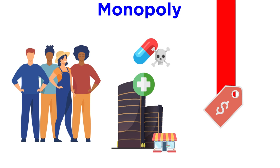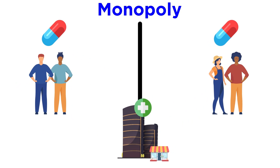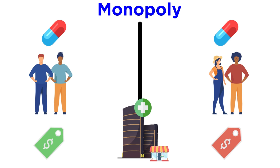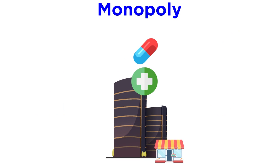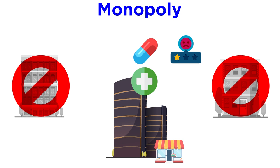Not only that, but the monopolist may even be able to divide consumers into two or more groups and charge a different price to each group. This is known as price discrimination. Monopolies can also cause a decline in the quality of goods and services, as there is no competition to put pressure on a company to increase or even maintain quality.